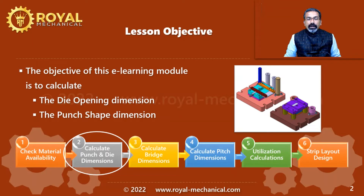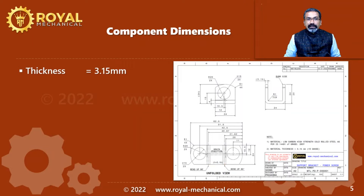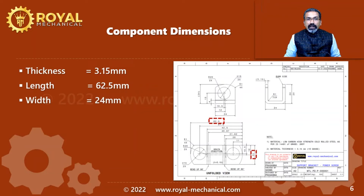In this step, we are going to calculate the punch dimensions and the die opening dimensions. Let's look at a few key dimensions essential for the blanking operation. The thickness of the component is 3.15 mm, the length is 62.5 mm, the width is 24 mm, and the corner radius is 1 mm.